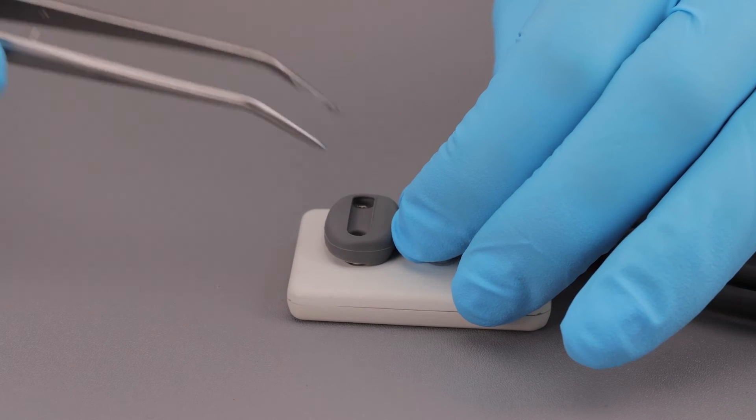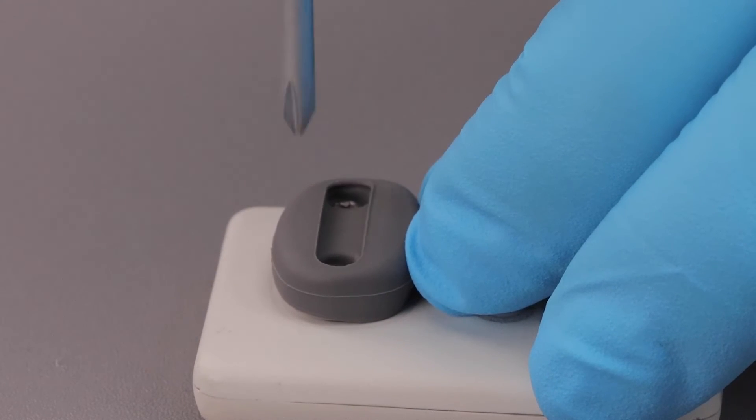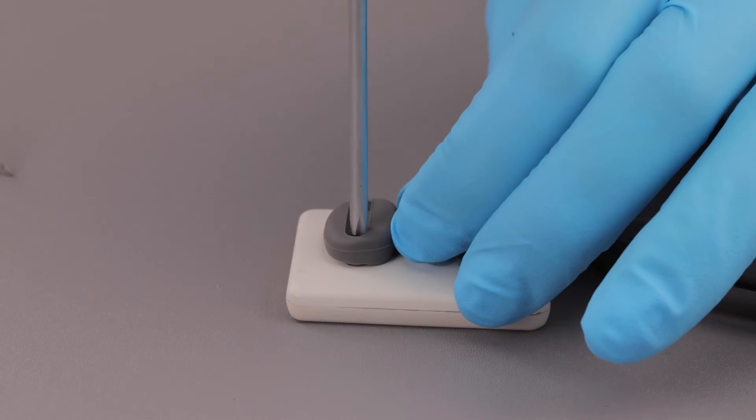Using the screwdriver, tighten the first screw just until you feel some resistance. Repeat this action for the second screw. Fully tighten both screws and make sure they are securely tightened.